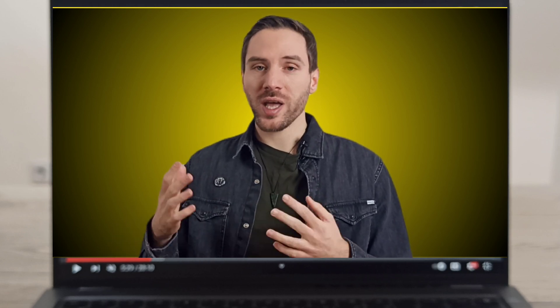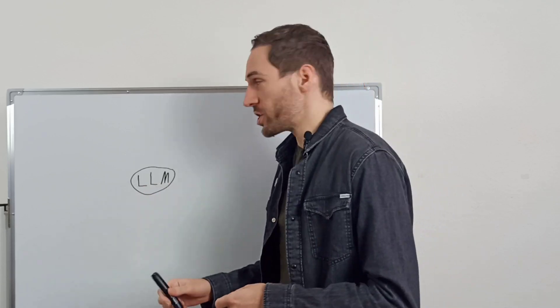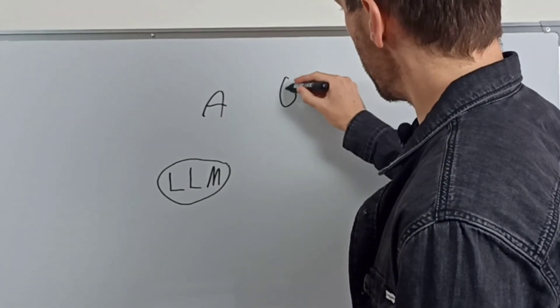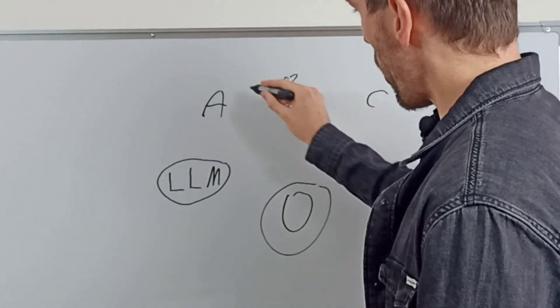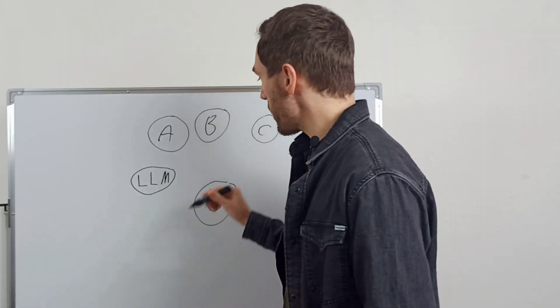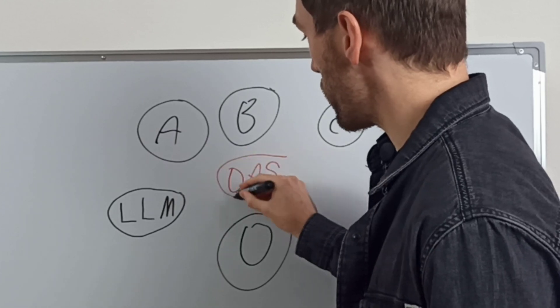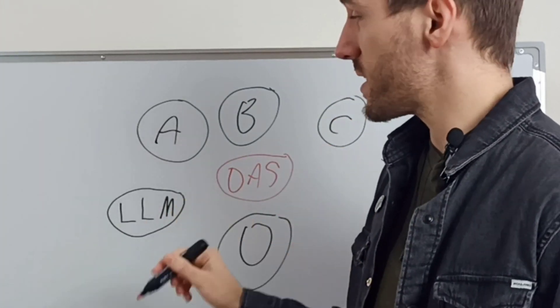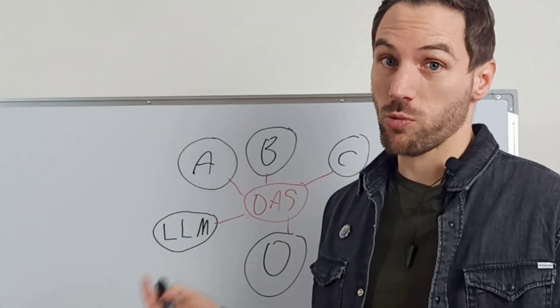Different approaches to AGI can all be integrated within Hyperron, which makes it very unique in its approach. So we basically have LLMs like ChatGPT and approaches A, B, C, D — all integrated. And in the center of it all, you have the DAS, or Distributed Atom Space. This is how all the different approaches will mainly communicate with one another.